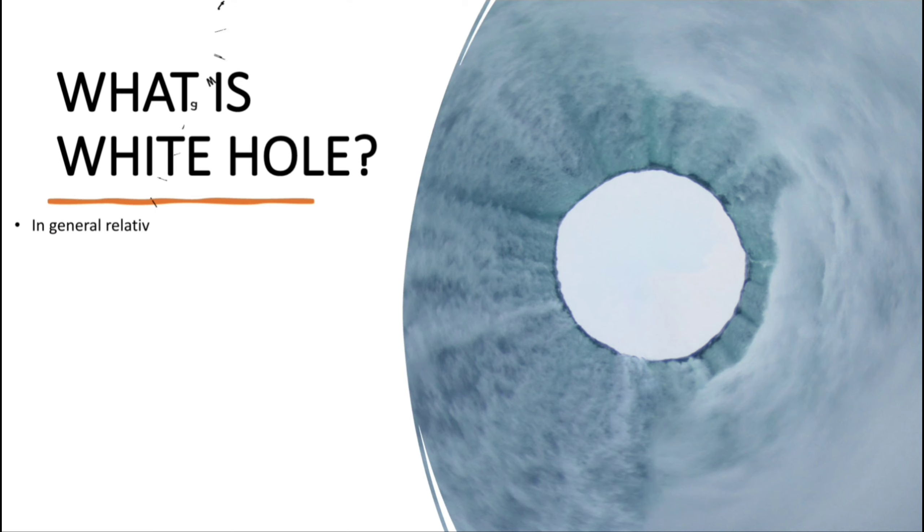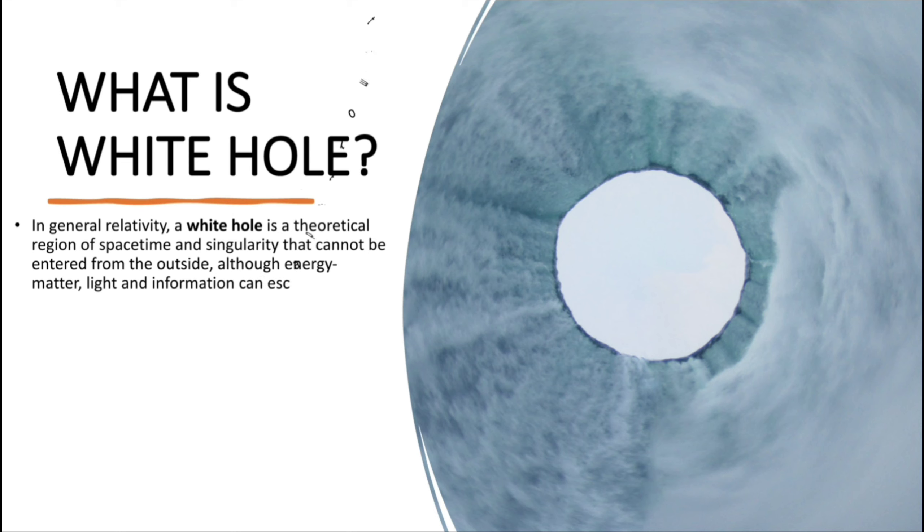In general relativity, a white hole is a theoretical region of spacetime and singularity that cannot be entered from the outside, although energy matter, light and information can escape from it. In this sense, it is the reverse of a black hole, which can be entered only from the outside and from which energy matter, light and information cannot escape.